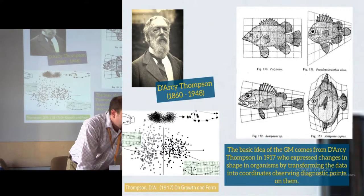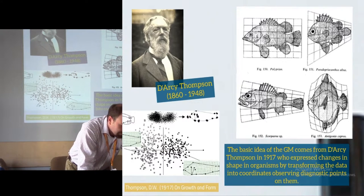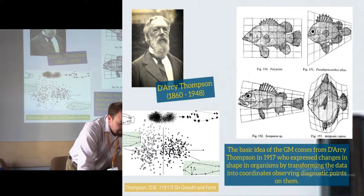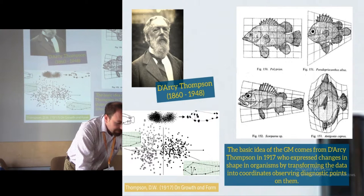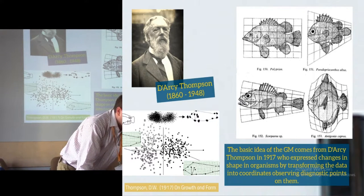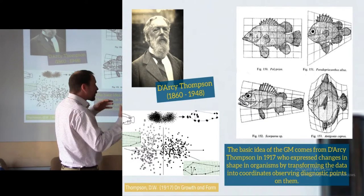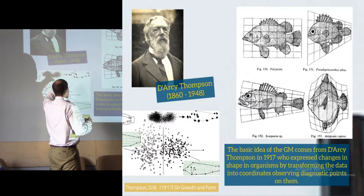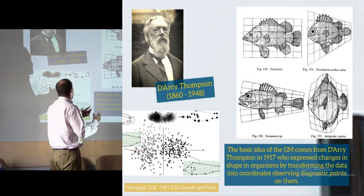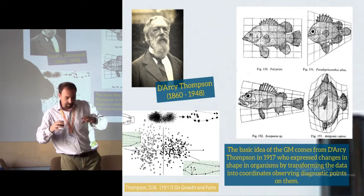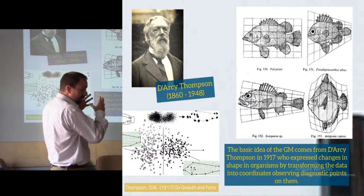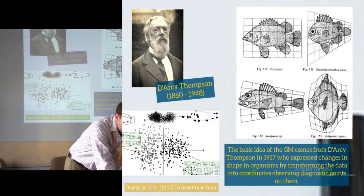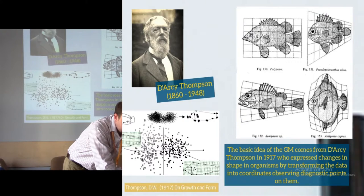This method originated with D'Arcy Thompson, who in 1917 expressed change in shape of an organism by transforming the data into coordinates, observing diagnostic points on them. He didn't measure the differences, but tried to find different characteristic points and projectile these points in a grid. This grid will be the basis of the comparison.